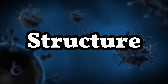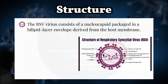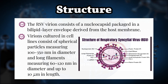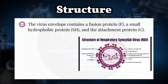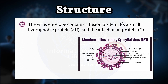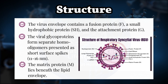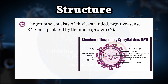Structure of Respiratory Syncytial Virus (RSV). The RSV virion consists of a nucleocapsid packaged in a bilipid layer envelope derived from the host membrane. Virions cultured in cell lines consist of spherical particles measuring 100–350 nanometers in diameter, and long filaments measuring 60–120 nanometers in diameter and up to 10 micrometers in length. The virus envelope contains a fusion protein (F), a small hydrophobic protein (SH), and the attachment protein (G). The viral glycoproteins form separate homooligomers presented as short surface spikes of 11 to 16 nanometers. The matrix protein (M) lies beneath the lipid envelope.